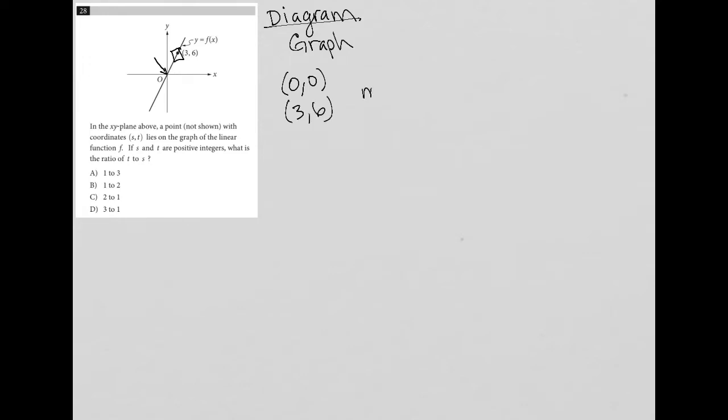Which means we'd have a slope of m equals 2, because slope is y2 minus y1 over x2 minus x1, which for us would be 6 minus 0 over 3 minus 0, which equals 6 over 3, which equals 2 over 1, which can just be written as 2.